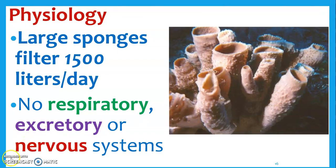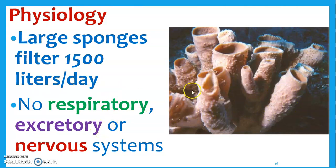It's all about surface area. They will filter a ton of water — 1,500 liters a day. But they're very basic animals. They don't really have a respiratory or excretory system; it's kind of right at the cell level, just in and out. And not really a nervous system either. So we'll start to add on these things as we move up the tree of life.